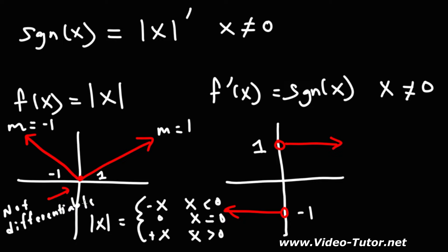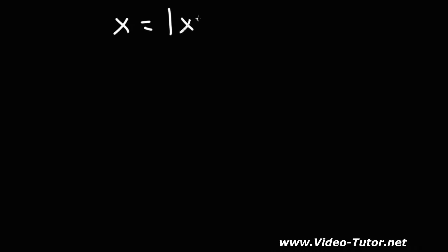For all other points, the signum function is the derivative of the absolute value function. The absolute value function is continuous at x equals zero but not differentiable there — the slope changes instantaneously from negative one to one, which is not a smooth transition. Now, something else to know about the signum function is that any real number can be expressed as the product of its absolute value and its signum function: x = |x| · sgn(x).